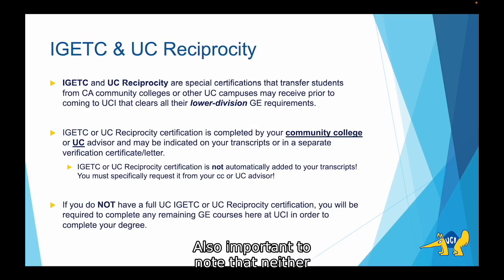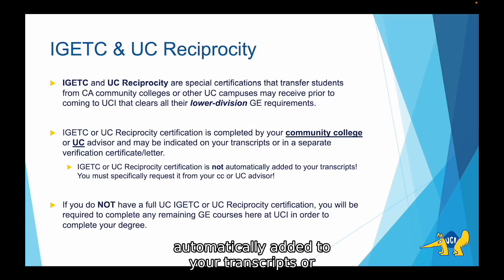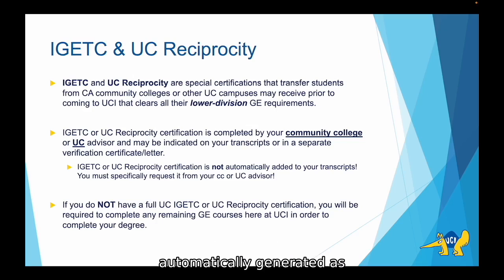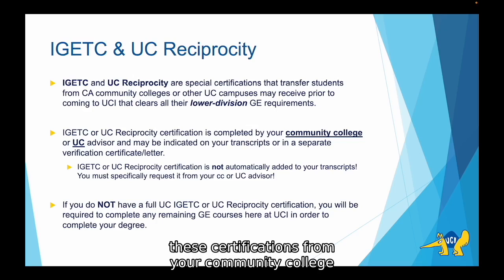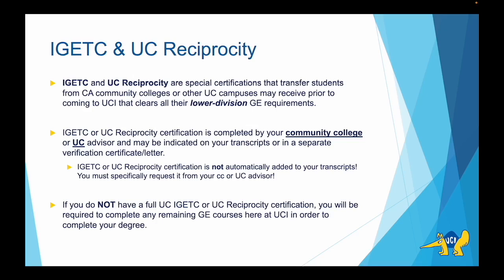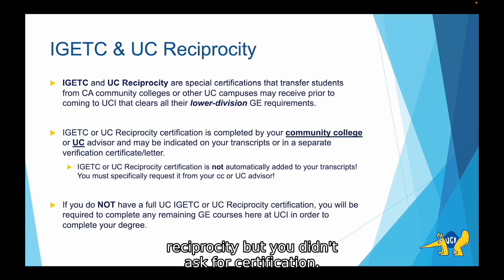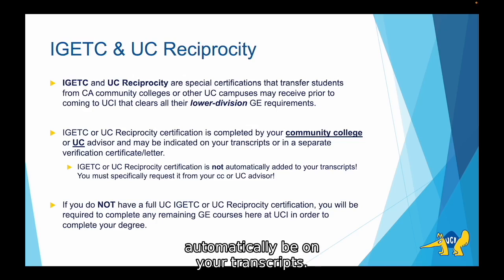It's also important to note that neither of these certifications is typically automatically added to your transcripts or automatically generated as an additional verification document. Typically, you as a student must request these certifications from your community college or from your UC advising team. If you did everything for IGETC or Reciprocity but didn't ask for certification, you won't have it — it's not going to automatically be on your transcripts.